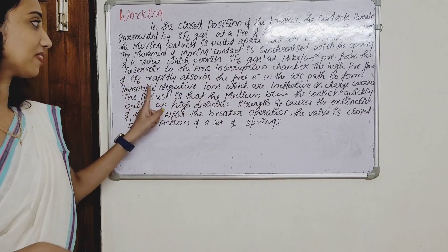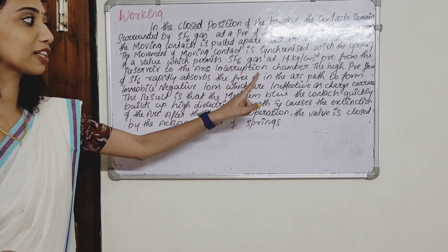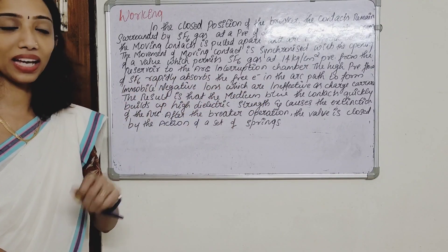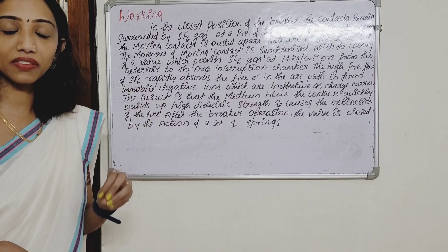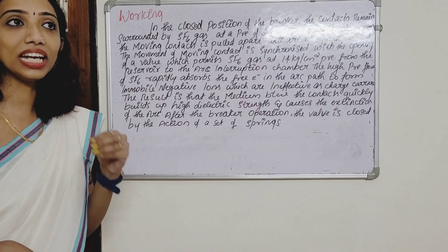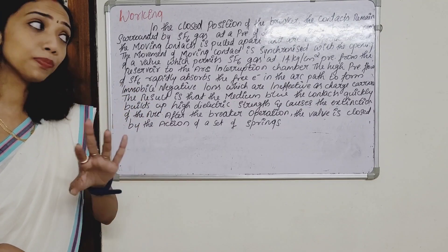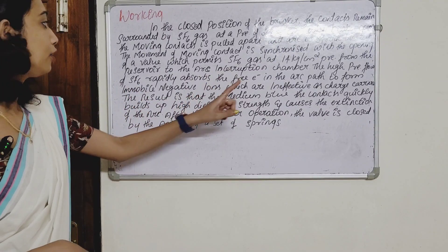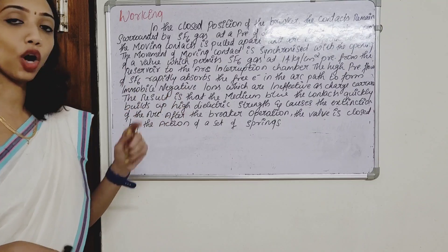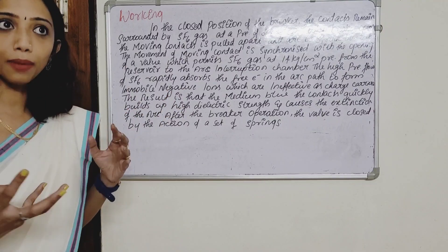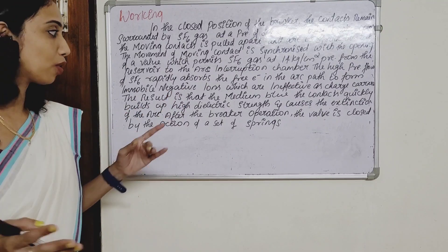The high-pressure flow of SF6 rapidly absorbs the free electrons in the arc path to form negative immobile ions.